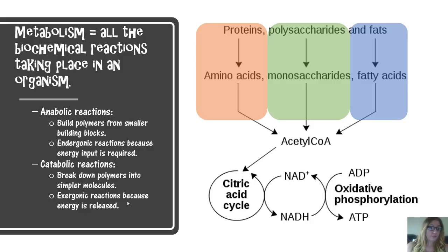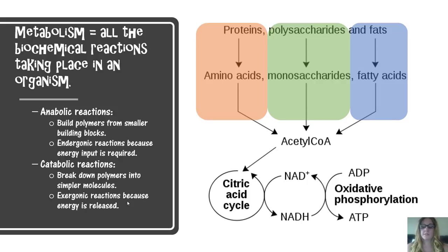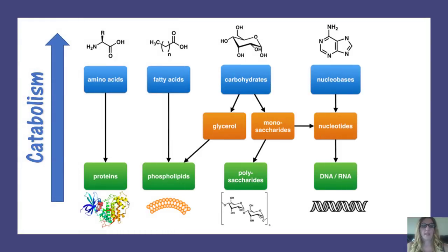Proteins need to be broken down into amino acids; polysaccharides need to be broken down into individual monosaccharides to be catabolized further; fats need to be catabolized into individual fatty acids and glycerides. When breaking down molecules, you go from polymer to monomer.